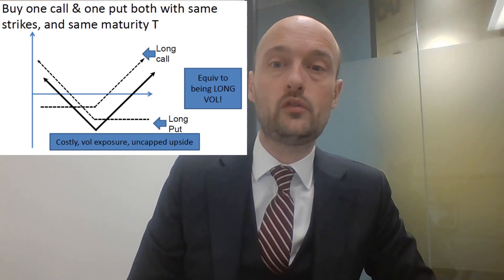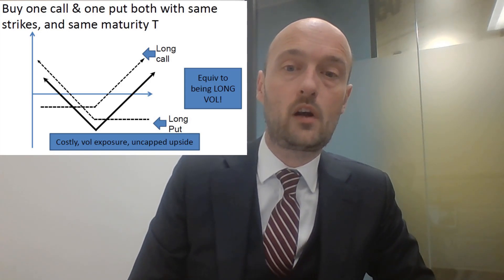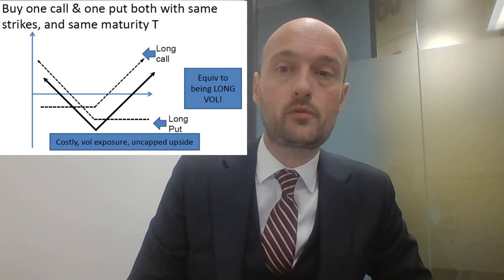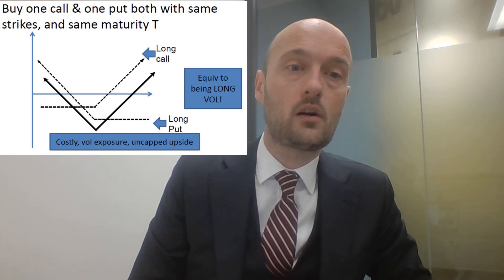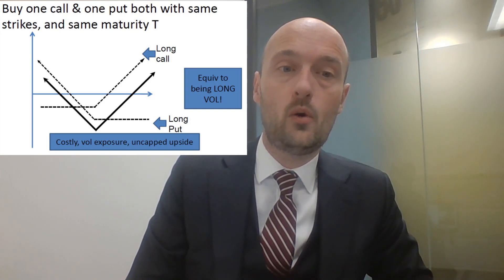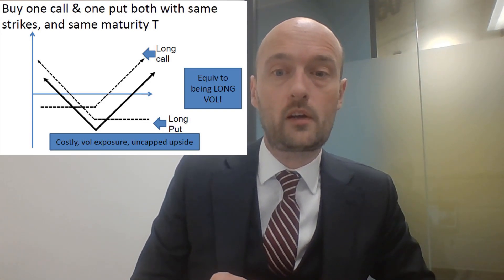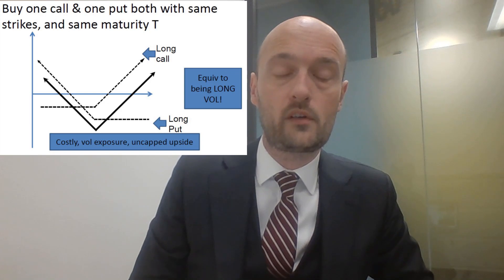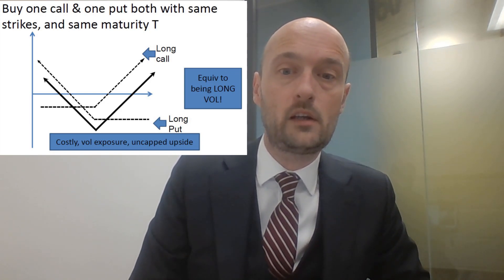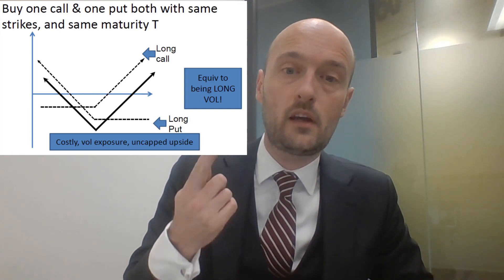When you buy a straddle, you're buying a call option and a put option with the same strike and the same maturity. Up here on your screen you should be able to see a payoff diagram. The dashed lines are the individual options — you're long a call and long a put. We've bought them both with the same strike price, so in this example it's an at-the-money strike: an at-the-money put and an at-the-money call.